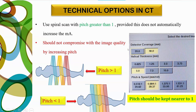Use spiral scanning with a pitch greater than 1, which can reduce scan time and decrease dose given to the pediatric patient. However, do not always compromise image quality by increasing the pitch — keep the pitch equal to 1 or only slightly greater than 1, as that will be most helpful in pediatric imaging.